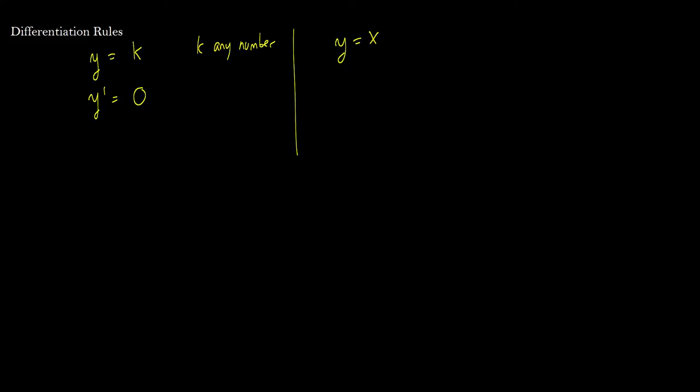Here's the second rule: if you have y equal to x, then the derivative of y is going to be 1. You can take these two for granted, and you can test them out using the definition of the derivative if you'd like. It might be good to do, because you're going to have one exam question using the definition of a derivative. You should test these out — make sure I'm not lying to you.